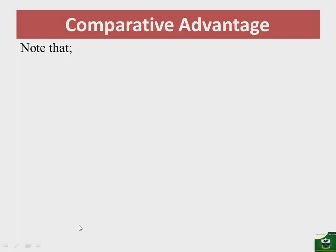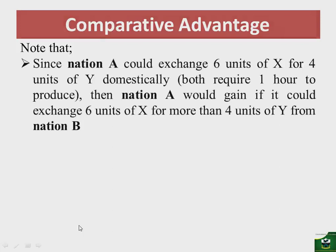Since nation A could exchange six units of X for four units of Y domestically — because both require one hour to produce — nation A would gain if it could exchange six units of X for more than four units of Y from nation B.